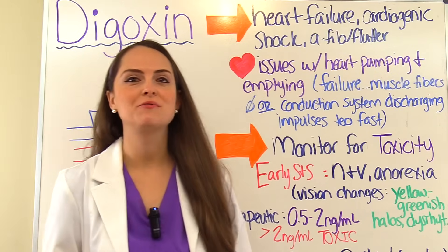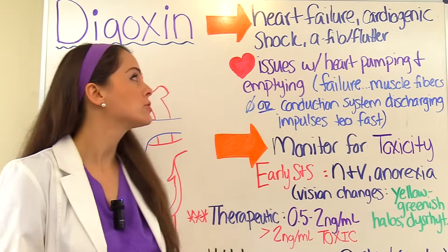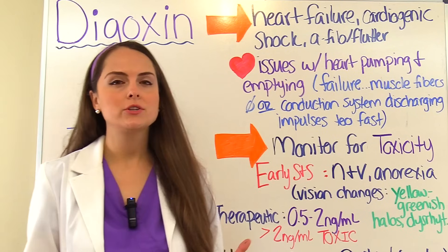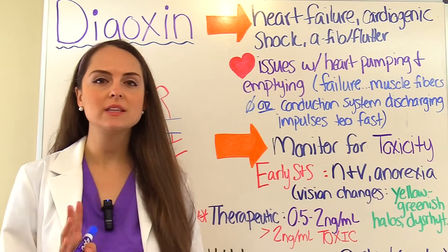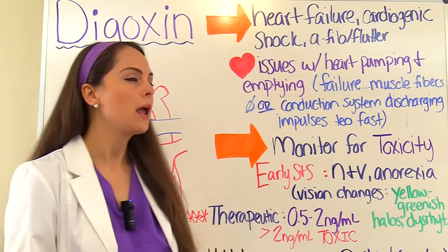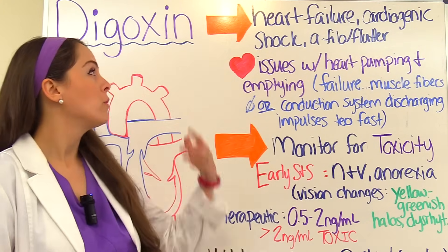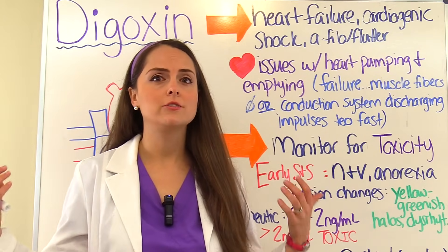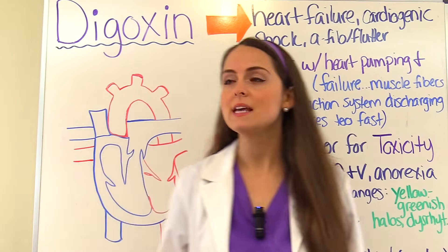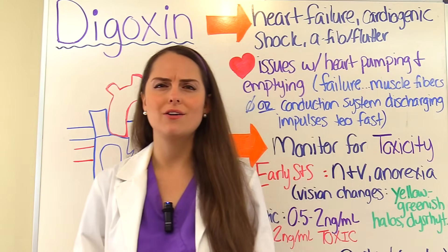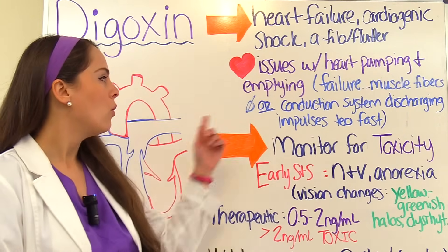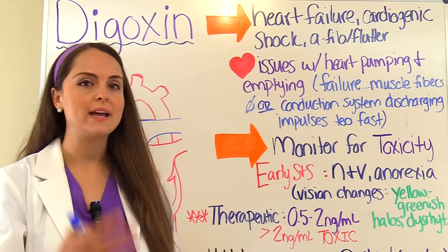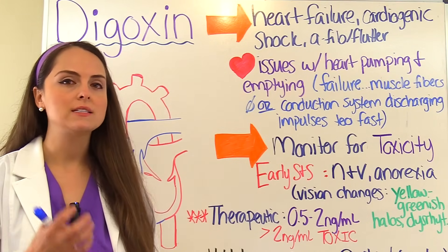Digoxin is used to treat heart failure, cardiogenic shock, or dysrhythmias like atrial fibrillation or flutter. With these conditions, there are issues with the heart pumping and emptying correctly — either the heart is failing as a pump, the muscle fibers aren't contracting well after a myocardial infarction, or the electrical conduction system in AFib or flutter is discharging impulses way too fast and altering how the heart is able to empty.